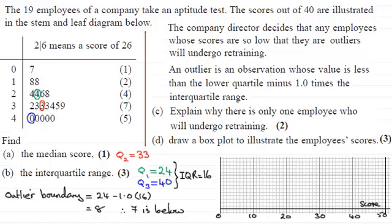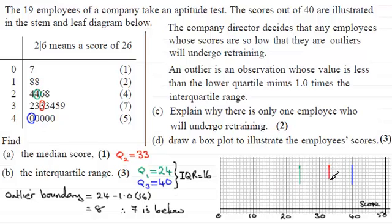Now put the quartiles in. Starting with the lower quartile Q1 at 24 — we've got 20 here, so counting up: 21, 22, 23, 24 — draw a line down there to illustrate the lower quartile. The upper quartile Q3 is at 40, so put that in there. And we want the median Q2 at 33 — there's 30, 31, 32, 33 — draw a line down there. Then we draw a box around this. This is the start of our box plot.